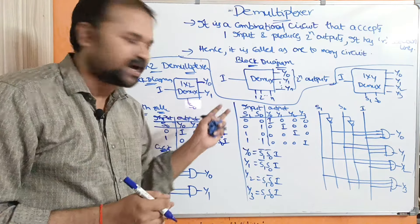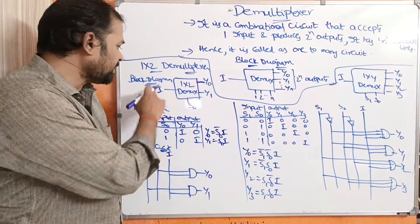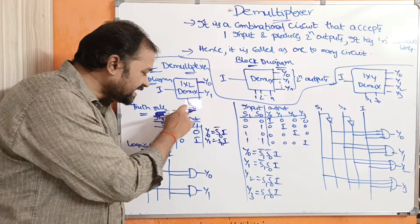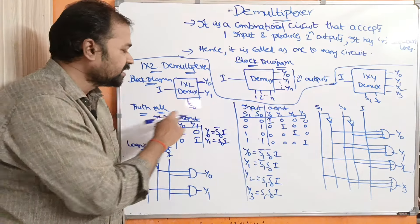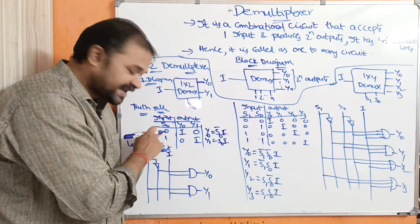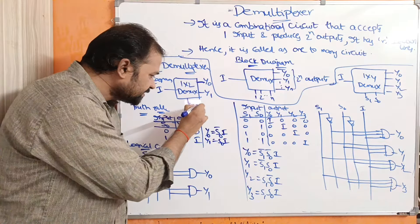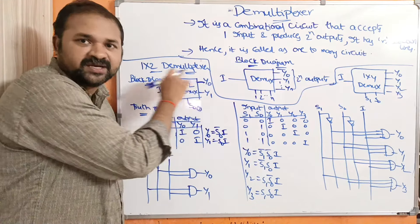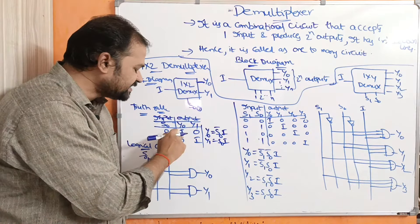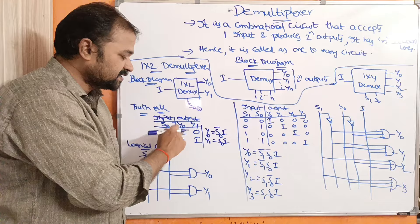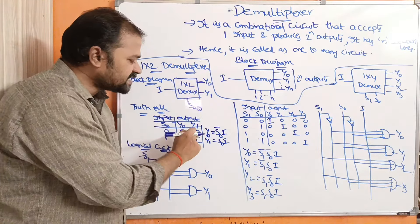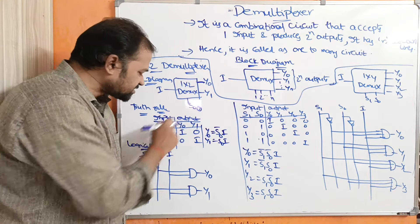Let us see the truth table for the 1×2 demultiplexor. We have two columns: input and output. s0 is the selection input, and y0 and y1 are the outputs. If the selection input s0 is 0, then this input is selected and displayed as the output, so y0 equals i and y1 equals 0.